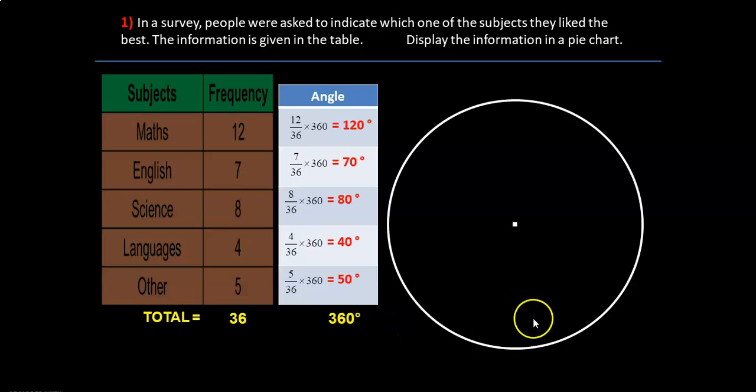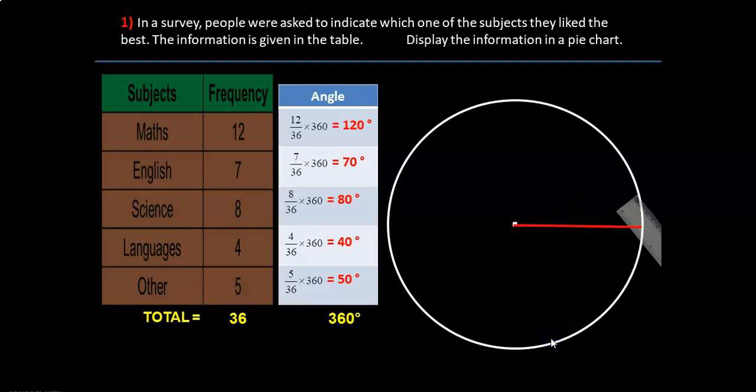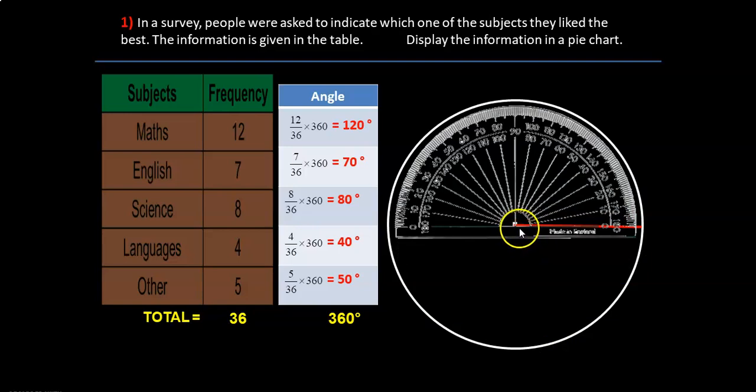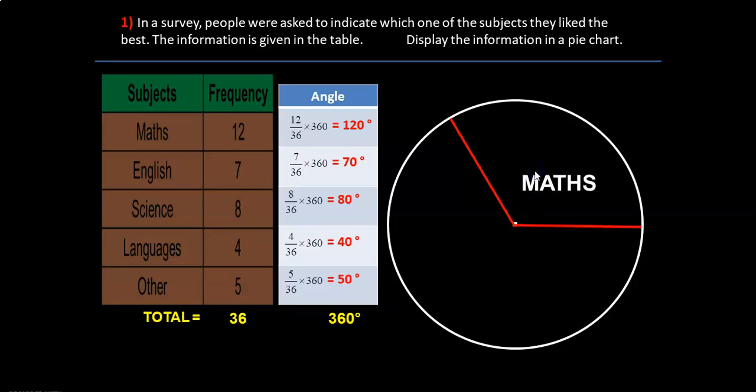Now you need a ruler, protractor and a pencil. I take my ruler from the center to the circumference and draw a line. After that take the protractor and then place the protractor, the base line on the line that you drew just now, the red line. And since we are drawing 120 degrees, you should know how to draw an angle. So it's over here. This is the arm and this is the base line. So 120 degrees all the way up to over here. So that's 120 degrees. And this angle represents mathematics.